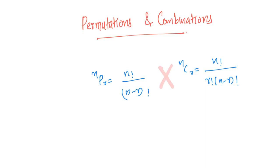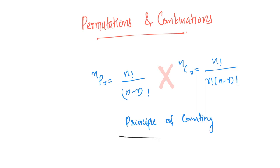What do we need to do? How do we need to do permutations and combinations? We need logic, thinking capacity, and a method. The basic principle is the principle of counting. If we learn this counting, we can easily learn permutations and combinations.